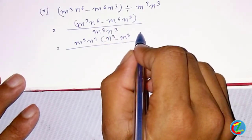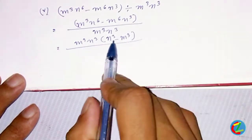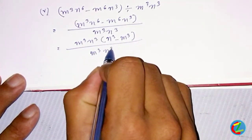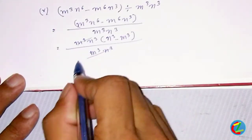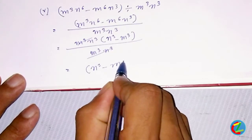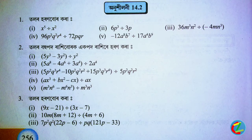The second law is the same way. In some states, the second law is n³ minus m³. The second law is n³ minus m³.